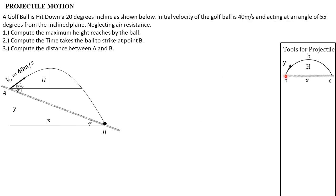A is the initial location, B is the highest location, and C is the final location of an object. Formula number one: the horizontal component of velocity is equal to the initial horizontal component of velocity. This means the horizontal velocity is constant — it does not change. Whatever the horizontal component is at the initial position, it remains the same at any other location.